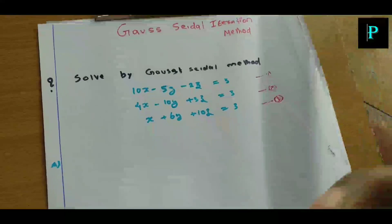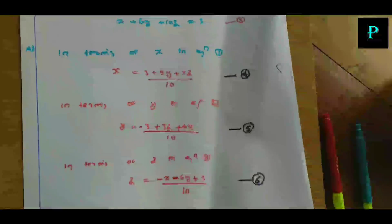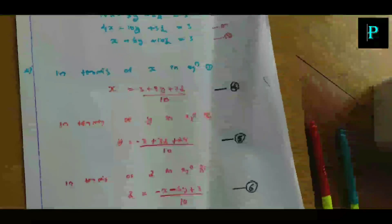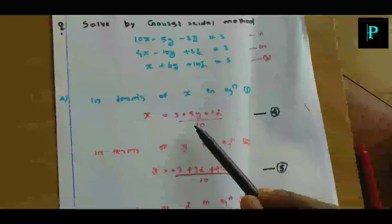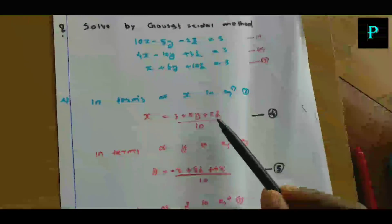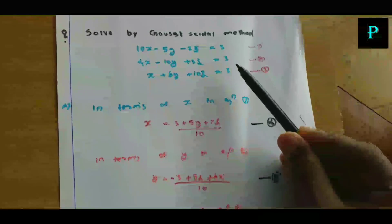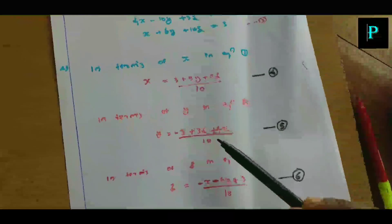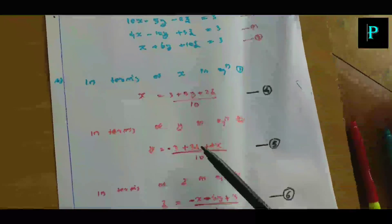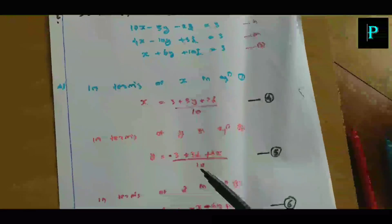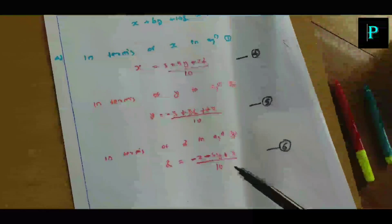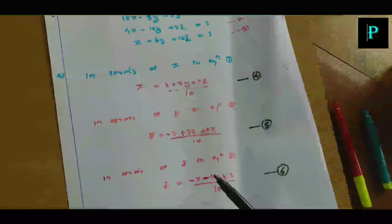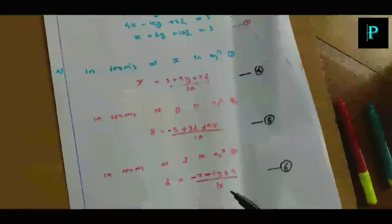Now we are going to take a look at the equations. X is equal to 3 plus 5Y plus 2Z, divided by 10. Y is equal to minus 3 plus 3Z plus 4X, divided by 10.